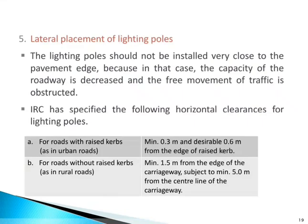Regarding lateral placement of lighting poles: the poles should not be installed very close to the pavement edges because that decreases the capacity of the roadway and obstructs free movement of traffic. The IRC (Indian Road Congress) has specified the following horizontal clearances for lighting poles. For roads with raised curbs as in urban roads: minimum 0.3 meter and desirable 0.6 meter from the edge of the raised curb. For roads without raised curbs as in rural roads: minimum 1.5 meters from the edge of the carriageway, subject to a minimum of 5 meters from the center line of the carriageway.